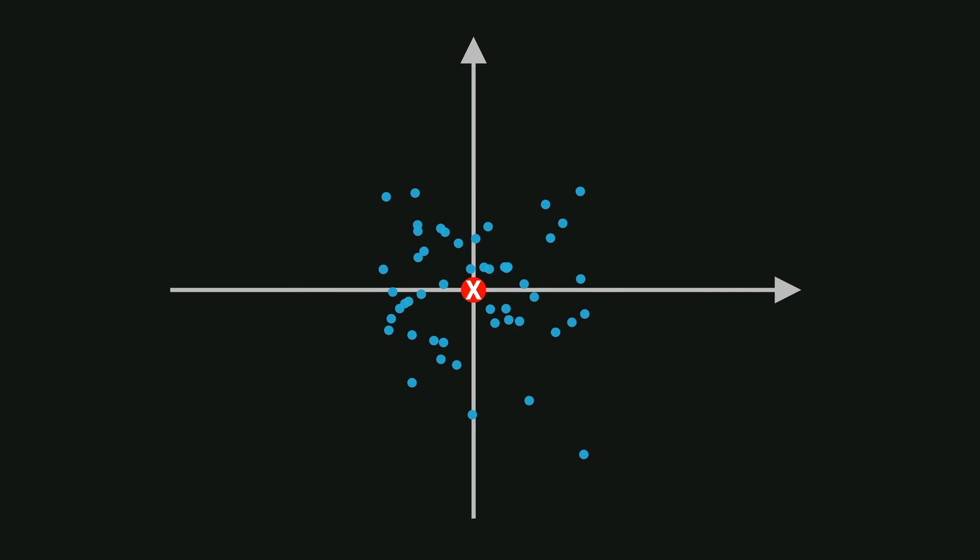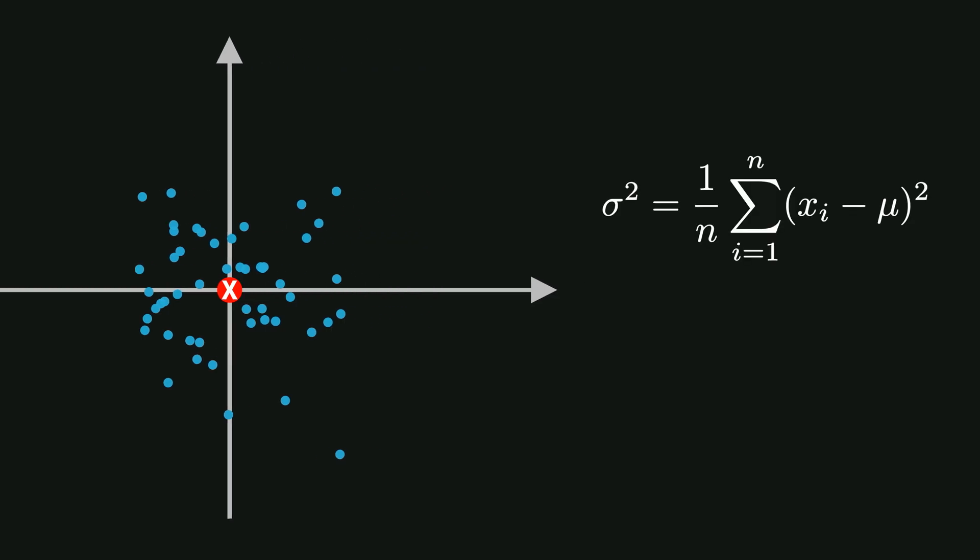The formula for making the variance 1 looks like this. First we calculate the variance of each feature. Since we have already centered the data around mean, so the mean is zero, we can simplify the variance formula by removing the mean term.